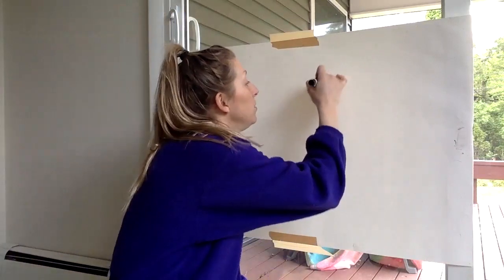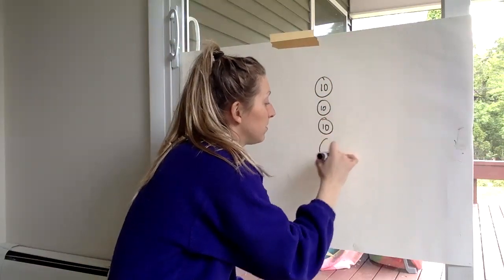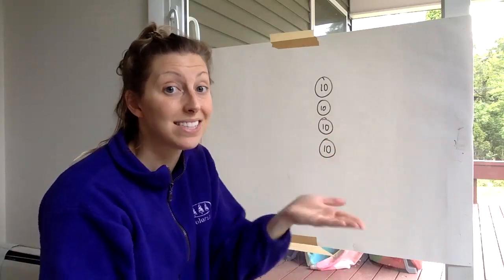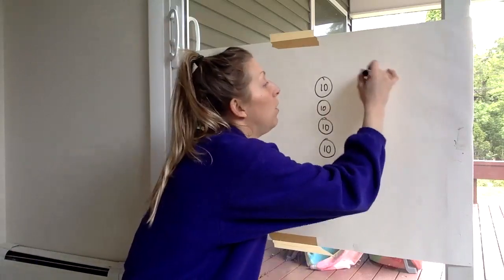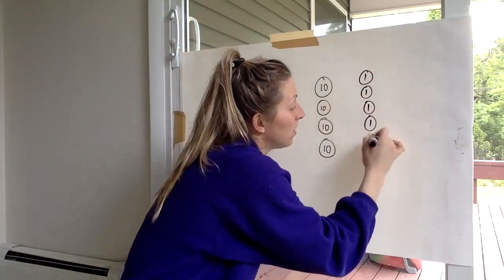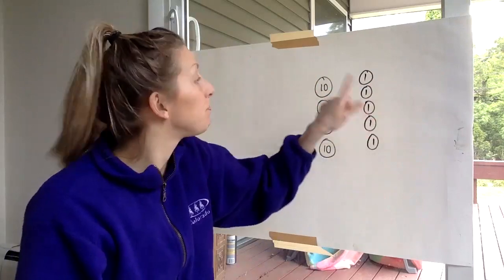So if we found four dimes, these are my quick dimes, because they have the 10 inside, which means they're worth 10 cents each. And then we found five pennies. And the penny is worth one cent. That's why I put a one.